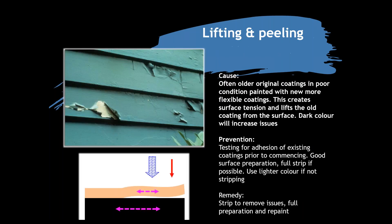Moving into timber substrates — lifting and peeling. We've all seen this on old weatherboard houses. It's often older original coatings in poor condition painted over with new, more flexible coatings. This creates a surface tension that lifts the old coatings from the surface, highlighting that the underlying adhesion is poor. Some coatings have been on houses since they were built — 100 to 120 years ago — and the new coating's surface tension is pulling the old coating off.